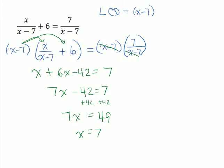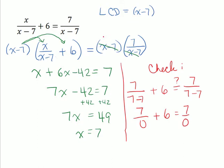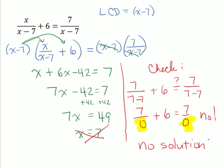But remember, we always need to check our answer before we're done. Let's check by replacing x with seven in the original equation. If we put seven over seven minus seven plus six, seven minus seven is zero — we have a zero in the denominator, not just once but twice. We can't have zeros in the denominator, so seven is not a solution. In fact, this equation has no solution.